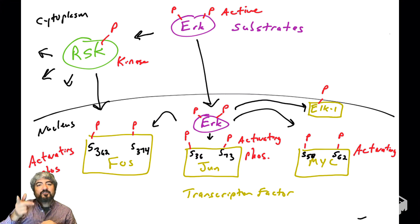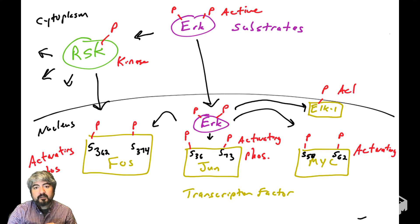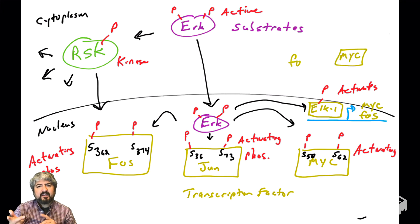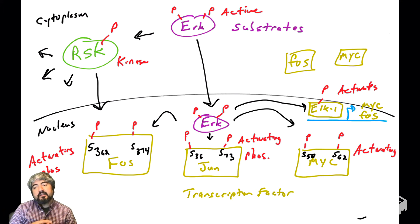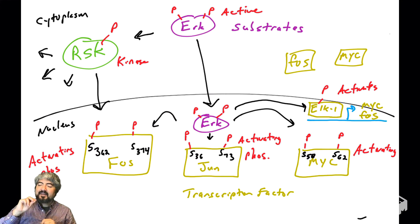We're going to introduce another transcription factor called ELK1. When ELK1, which is a transcription factor, is phosphorylated by ERK, ERK will activate ELK1. ELK1 binds promoters — specifically the promoters of genes such as MYC and FOS. So now we get the MYC and FOS genes turned on more, giving more gene transcription and translation, making more MYC and FOS protein. So ERK can directly activate the proteins MYC and FOS, and then activate transcription factors which drive the production of MYC and FOS.